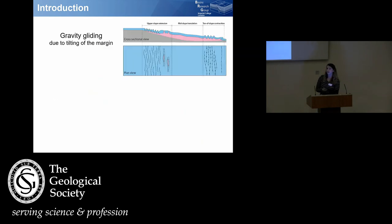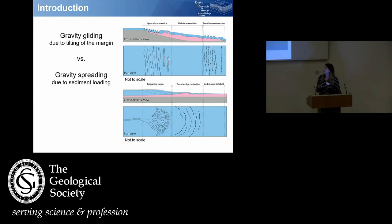When we think about salt tectonics on passive margins, there are typically two end-member models that everyone associates with salt tectonics. The first one is gravity gliding. This is where the margin becomes tilted, so the salt tries to flow down the slope as a fluid would. As it deforms, it creates these extensional structures up-dip and the contractional structures down-dip as everything is moving down the slope.